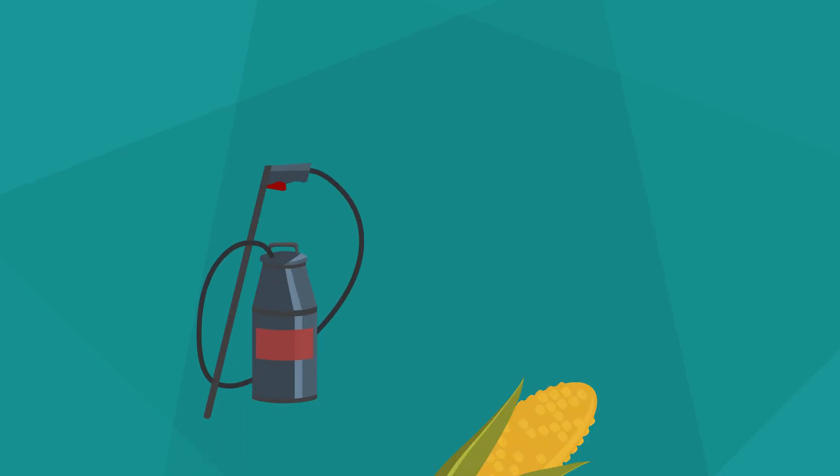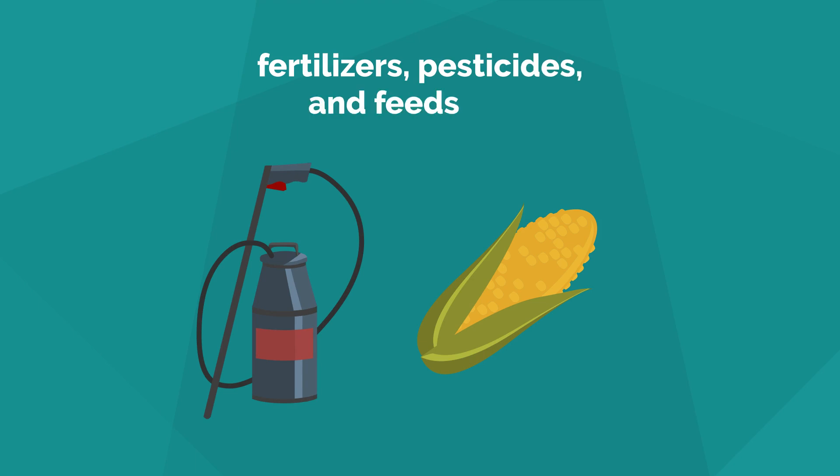Indirect energy includes producing or using fertilizers, pesticides, and feedstuffs.